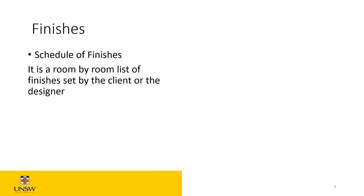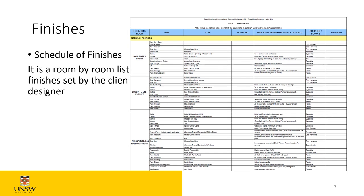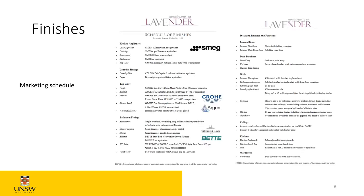For the finishes, we talked about the schedule of finishes. A schedule of finishes is a room-by-room list of finishes set by the client and the designer. It specifies the rooms, the items, the model, the description, and who the supplier is. You need to differentiate between the schedule of finishes and the marketing finishes. Marketing finishes is what they present to you when you buy the apartment, townhouse, or house — it gives you a small brief about kitchenware, tapware, bathroom fittings, ceiling, walls, kitchen stone, and appliances.